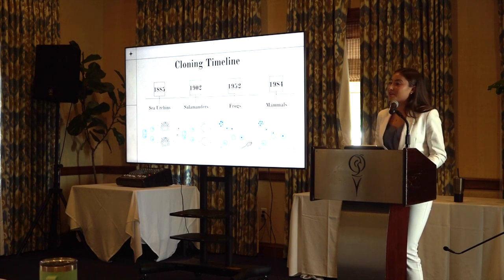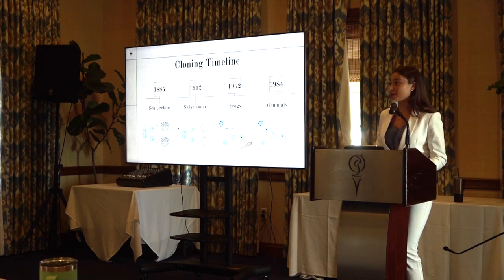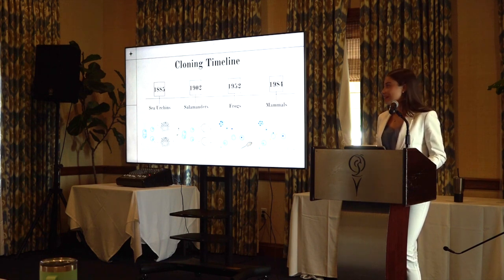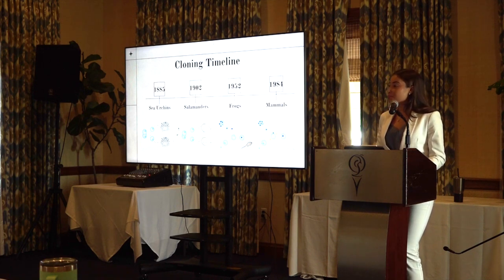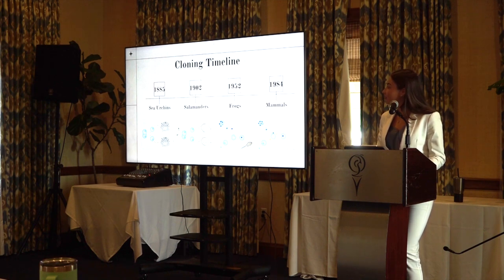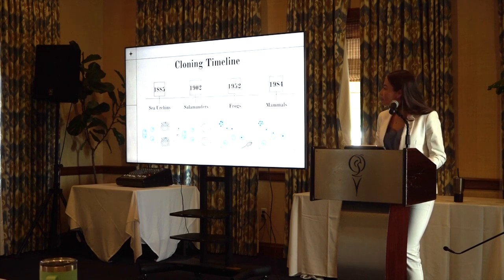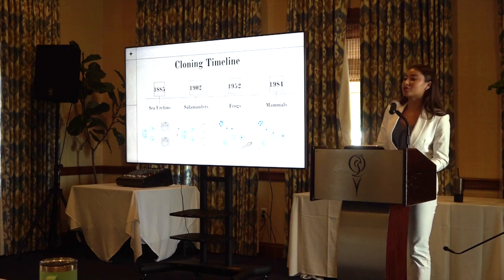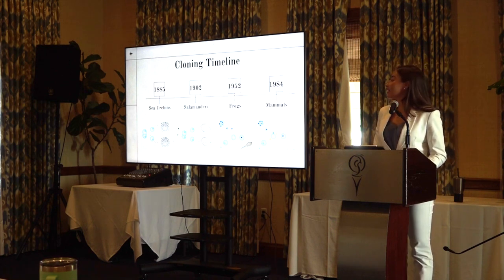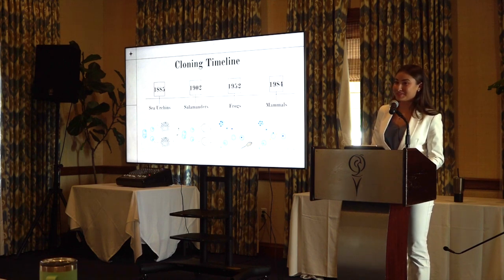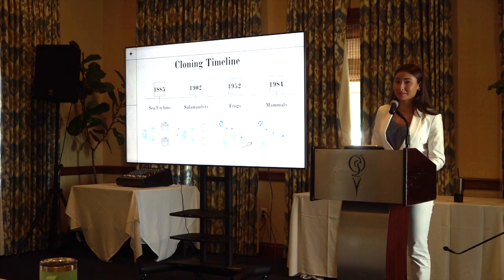Cloning actually began a very long time ago in 1885 when Dreisch decided to use invertebrate organisms and he split a two-celled sea urchin embryo, allowing the two cells to develop on their own into a fully functioning sea urchin organism. The same process was followed by Speman when he used a two-celled embryo of a salamander — except salamanders are vertebrates — and he used a baby hair to split the two, which is very interesting. The two cells developed on their own and formed a fully functioning organism.